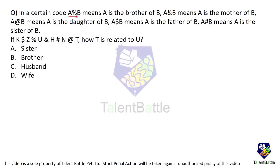In a certain code: A% B means A is the brother of B; A& B means A is the mother of B; A@ B means A is the daughter of B; A$ B means A is the father of B; A# B means A is the sister of B. If this relation is given, how is T related to U? Focus only on the U-to-T part. U& H means U is the mother of H — so U is female.